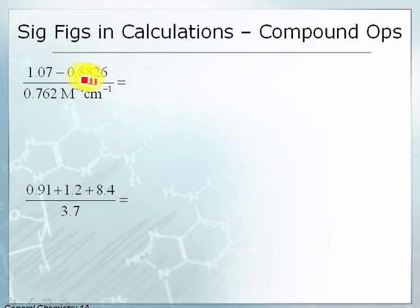So let's take a look at this first problem. Here we have a subtraction operation in the numerator of a fraction. And if you're plugging this in your calculator, if you're doing it by hand, you do this subtraction first, followed by the division operation. And we're going to treat sig figs exactly the same way. If we take 1.07 minus 0.8826, what we end up with is 0.1874.